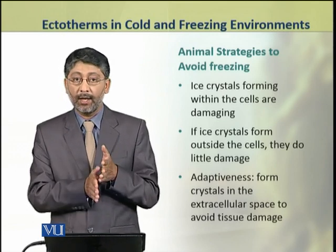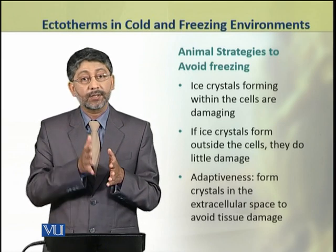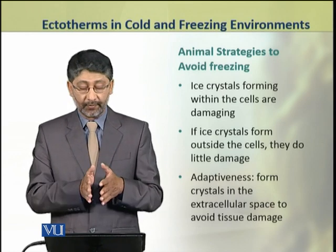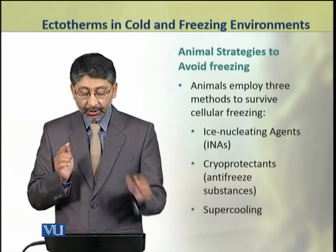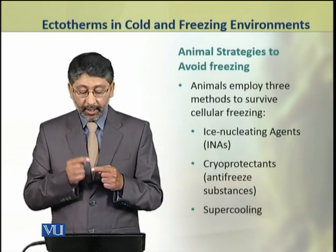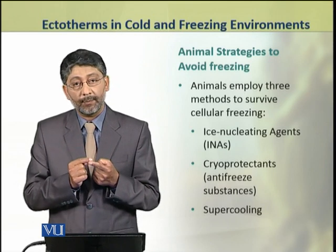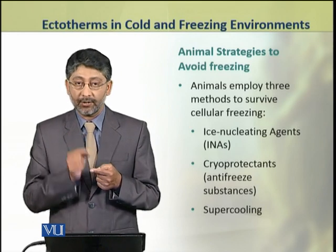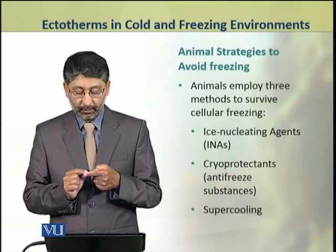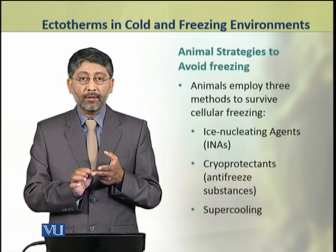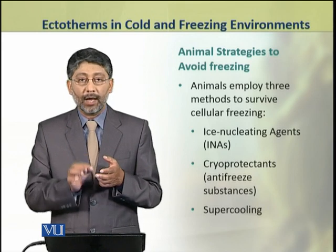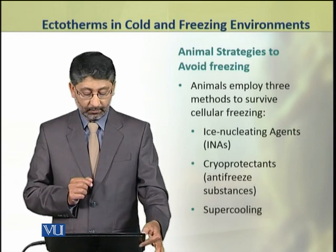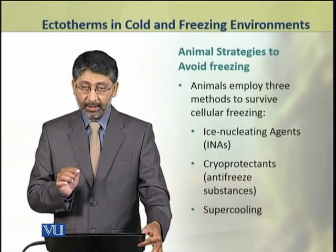Adaptations in animals involve ensuring that if ice crystals form, they form in the extracellular fluid, while nucleation within cells is prevented. Animals have many adaptations for this purpose, and there are three major methods most animals use: first, keeping ice nucleating agents (INAs) in their bodies; second, keeping antifreeze substances called cryoprotectants; and third, supercooling. We shall discuss all three methods in detail.